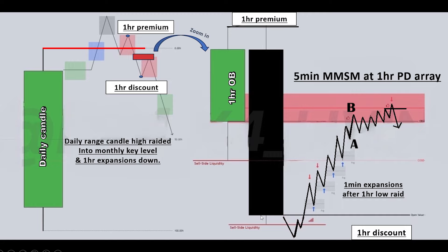Here is the one-minute market maker buy model after riding the hourly candle low. The 50% of the candle is a high-probability target, as this one-minute market maker buy model is a counter-trend trade and a very risky trade — you cannot aim to hold it for this hourly candle high. You can frame a less risky pro-trend five-minute market maker sell model at this hourly PDR in the premium. They form a range — a five-minute and one-minute range, denoted by letters A and B — then they broke out of this range. Turtle soup: you can sell here and aim for this candle low, as this is pro-trend and aligned with higher time frames.